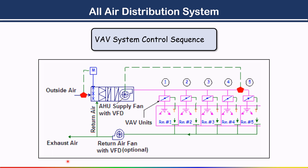As the terminal boxes open and close, the static pressure in the ducting increases and decreases. This change in pressure is sensed by the VAV controller, which reacts to vary the air delivered by the unit. The AC drive controls air volume by keeping duct pressure constant. The pressure sensor is located at the most remote point of the supply main duct — between room 4 and room 5, the farthest point from the AHU.